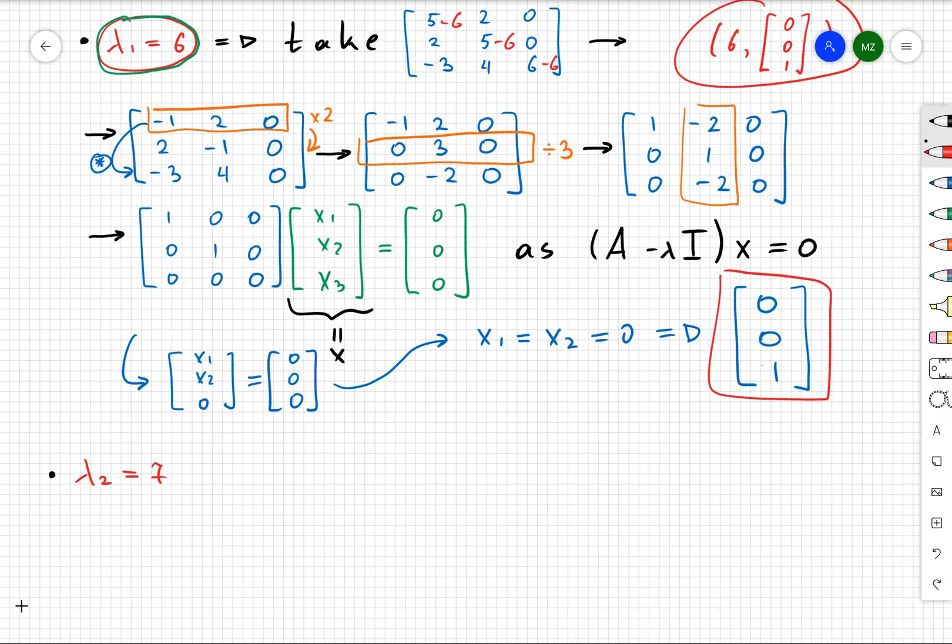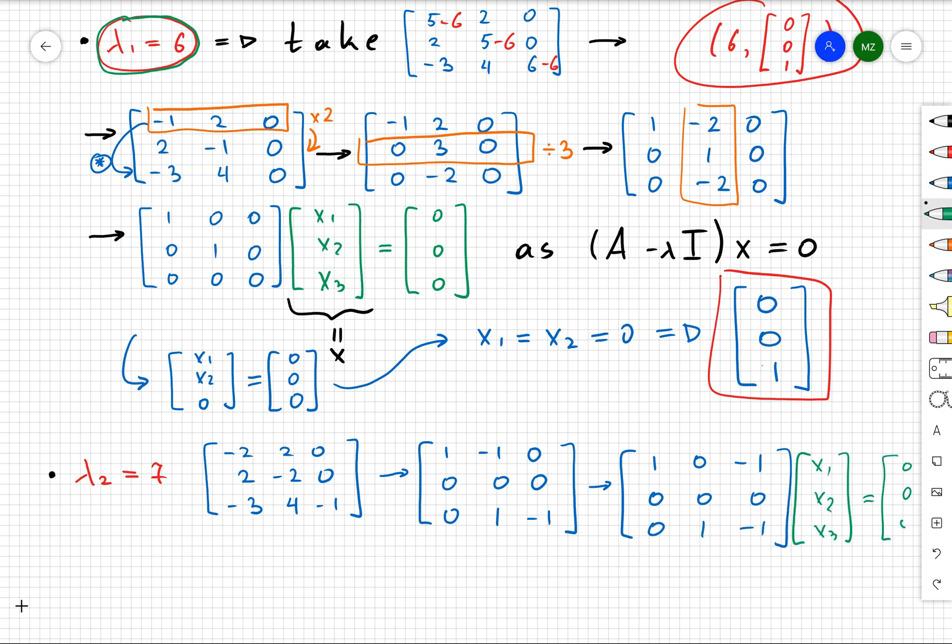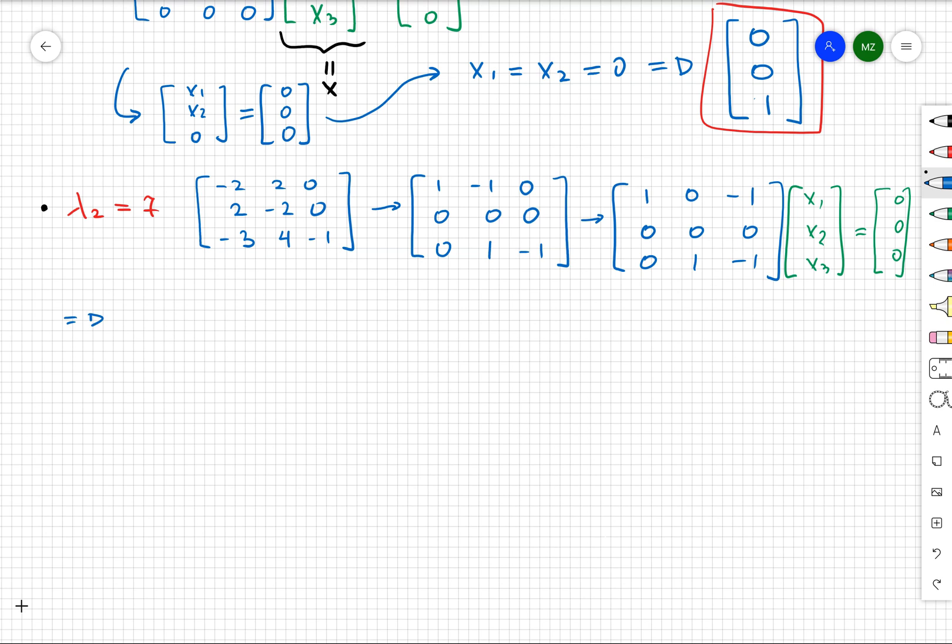The same procedure I'm going to repeat for λ₂ = 7, where I'm going to obtain the following matrix. You can just follow my row simplification where I did some steps in my head, and I'm going to obtain the following matrix. After that, I want to have zeros above one in my second column. That's how I'm going to obtain the following matrix.